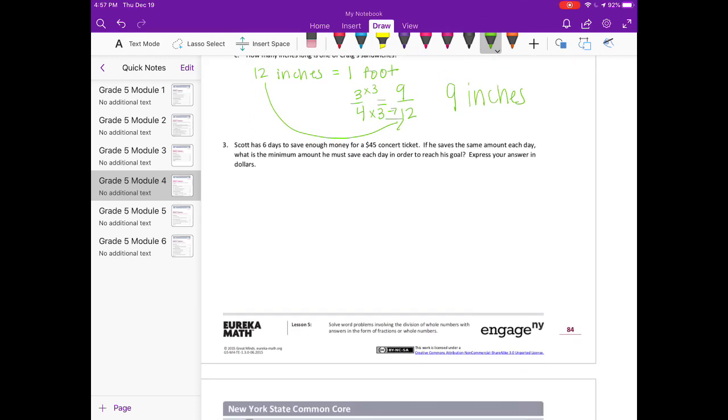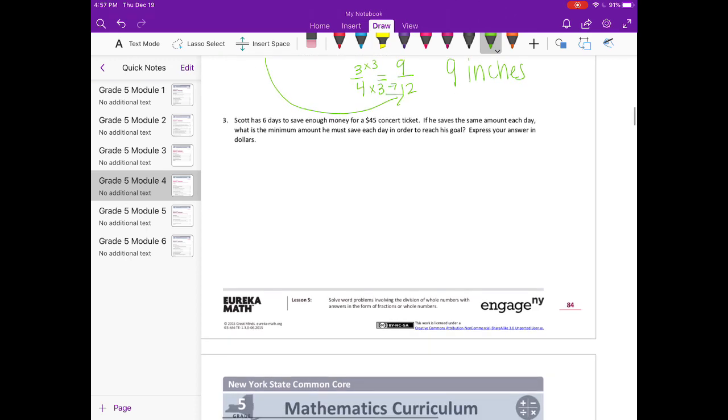Number three: Scott has six days to save enough money for a $45 concert ticket. If he saves the same amount each day, what is the minimum amount he must save each day in order to reach his goal? Express your answer in dollars. So he has six days to get $45. So here's what he needs: $45, and he needs to do it in six days.